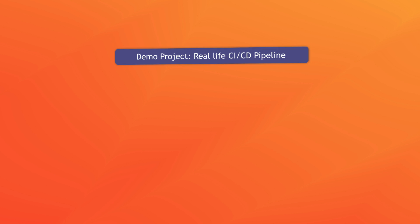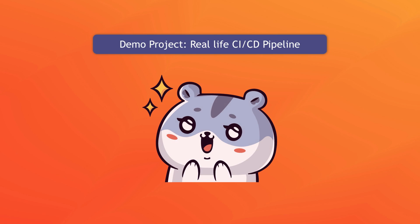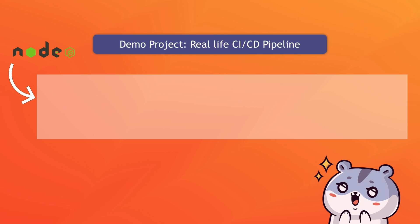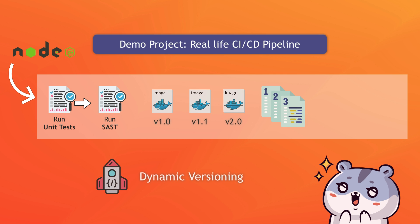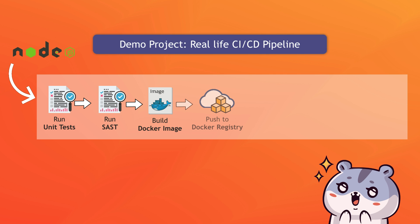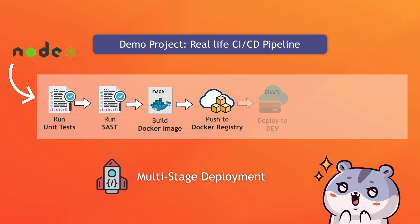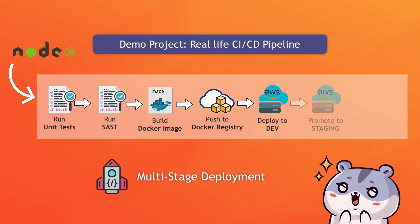In the first demo project, we will build a real-life pipeline deploying a Node.js application, testing the application with simple unit tests and security tests, incrementing and dynamically setting version for the Docker image, building and pushing the image to GitLab's Docker registry, doing a multi-stage deployment to a deployment server with Docker Compose, and promoting from development, staging, and production environments.